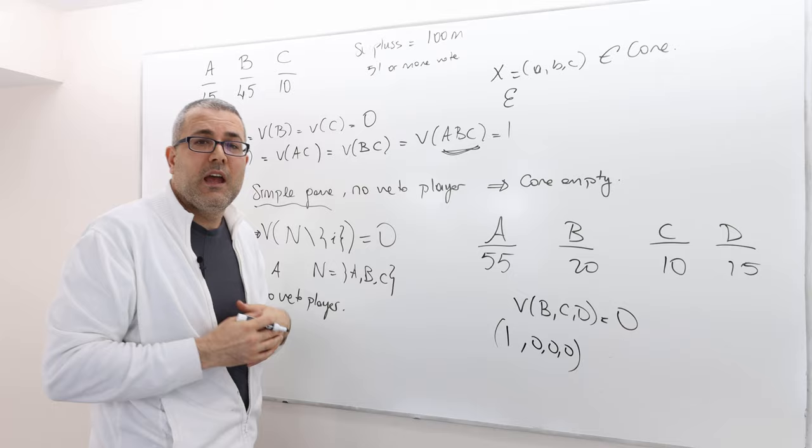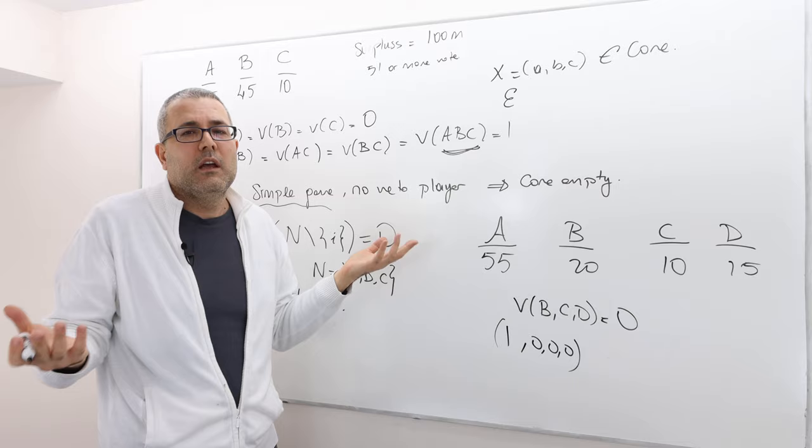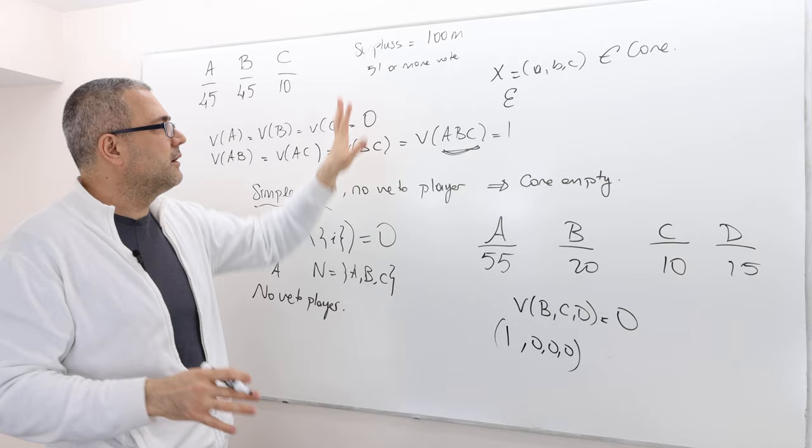And it makes sense, right? I mean, political party A actually has the majority. And so, well, I mean, they should form their own government. They don't need any coalition. Well, I mean here, this is not a government forming example, but you got the idea here.